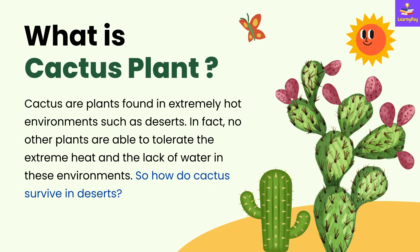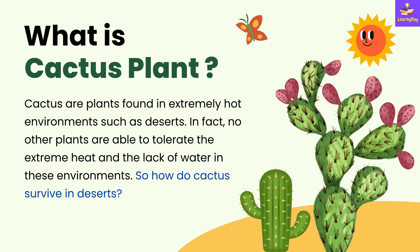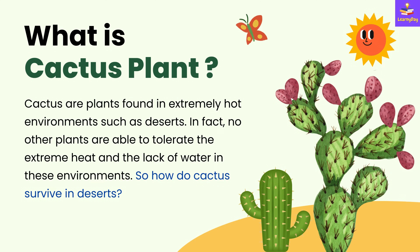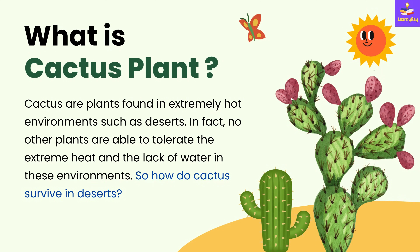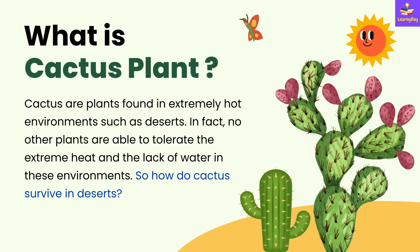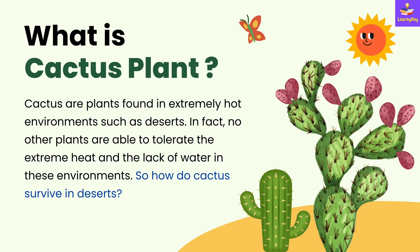What is a cactus plant? Cacti are plants found in extremely hot environments such as deserts. In fact, no other plants are able to tolerate the extreme heat and the lack of water in these environments.